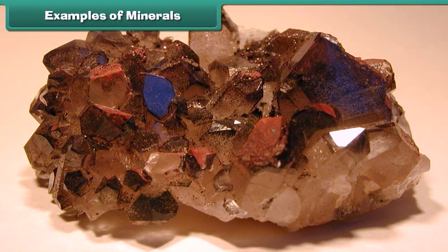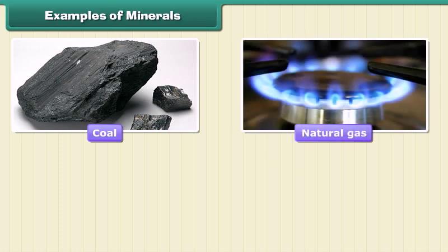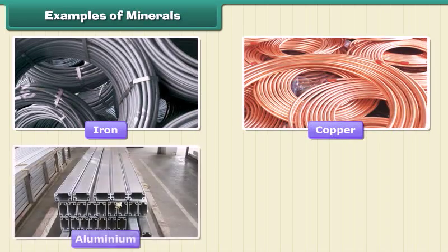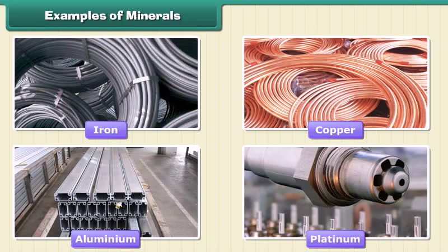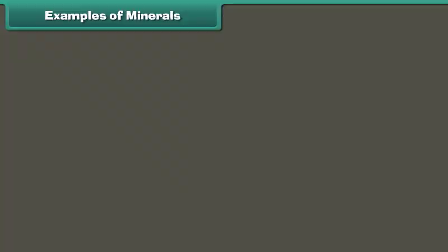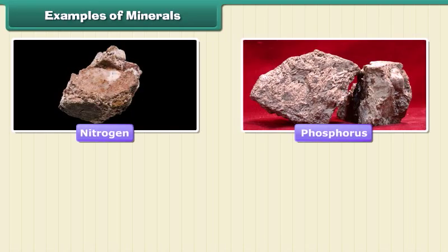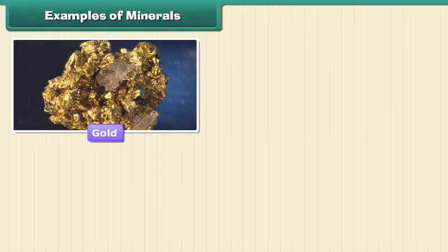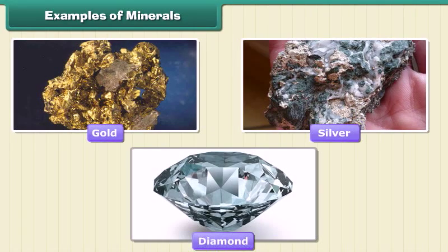Minerals are very important to humankind. Some minerals are used as fuels — for example, coal, natural gas, and petroleum. Some are used in industries, like iron, copper, aluminium, and platinum. Minerals like gold and lithium are used in medicines. Nitrogen, phosphorus, and potassium are used in fertilizers. Gold, silver, and diamond are used in jewelry.